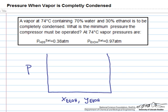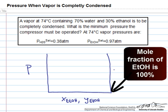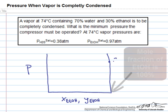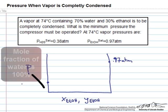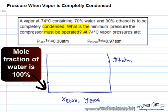We can plot the vapor pressures as well. So ethanol, pure ethanol will be on the right here where mole fractions are 100%. So this will be 0.97 atmospheres and we'll plot some point down here for pure water of 0.38 atmospheres.